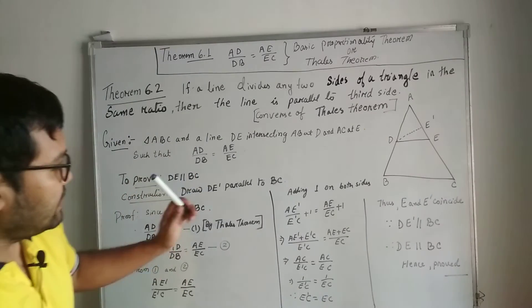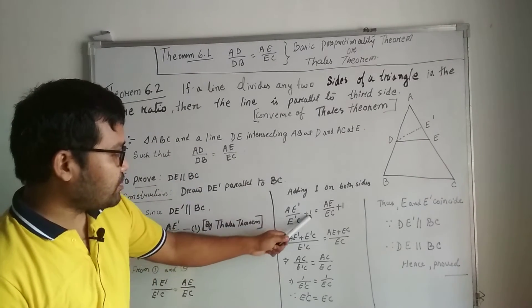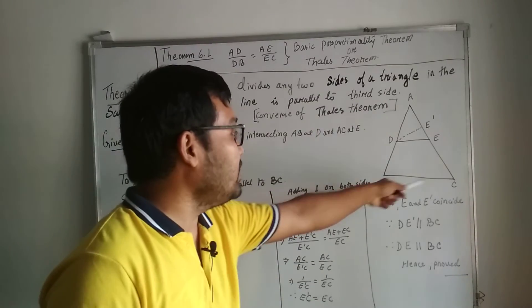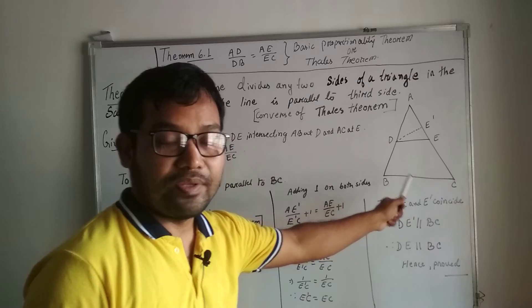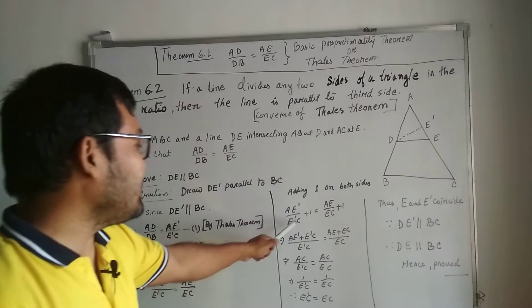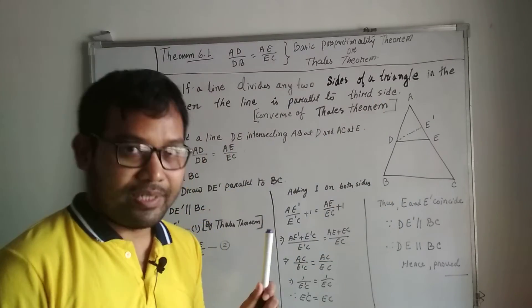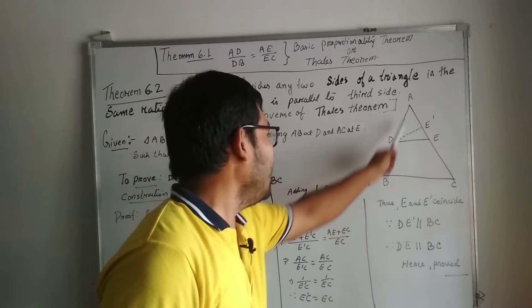We see AE' by E'C plus one equals AE by EC plus one. Why plus one is added? So that we can get the overall descriptions of the triangle, the bigger line segments AB and AC.